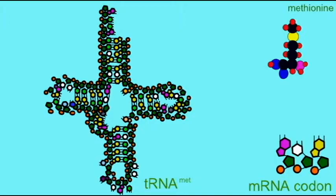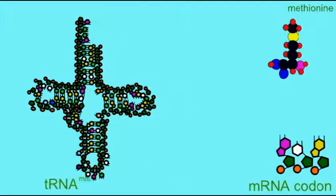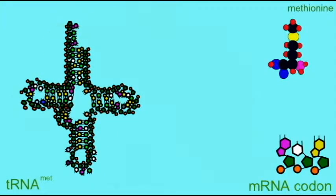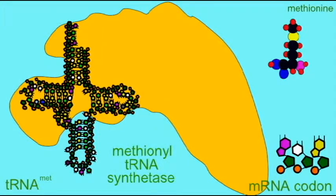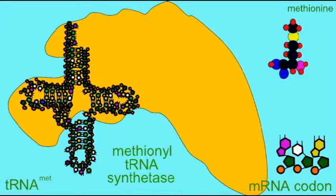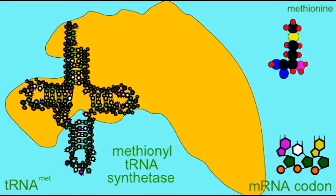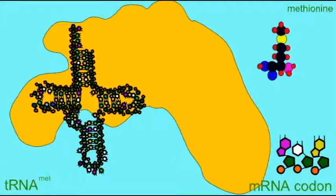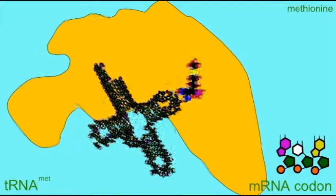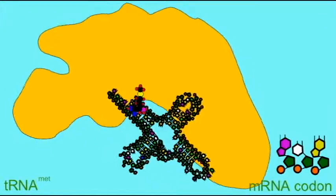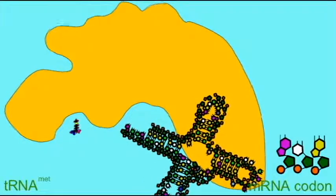A tRNA is required to bring this amino acid methionine to the mRNA codon. Only specific tRNAs, known as tRNA mets, will bring methionine to this mRNA codon. And there are enzymes which charge these tRNAs with methionine. These enzymes are specific and will only bind to tRNA met.